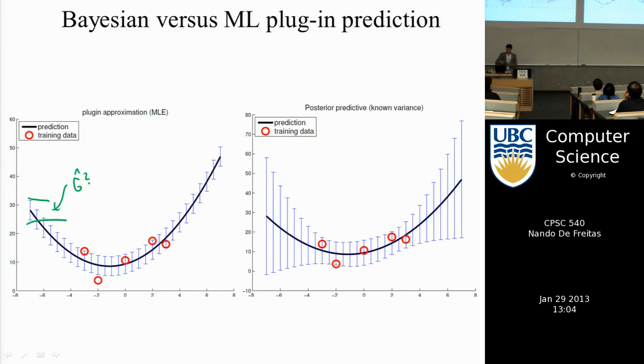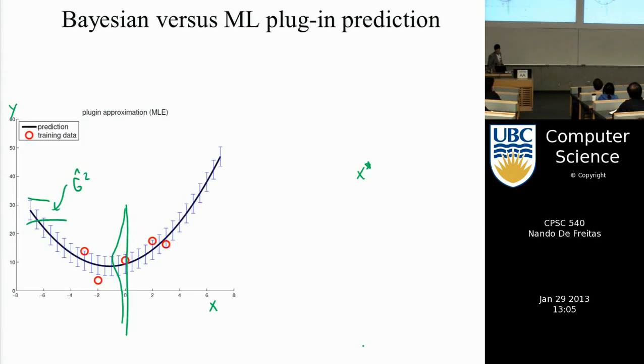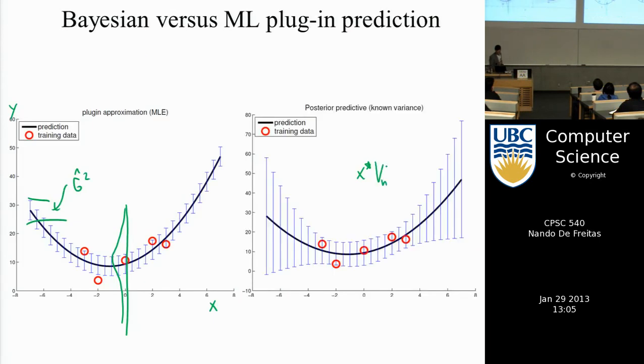And so each point, if we look at it marginally, if this is x and this is y, each point is distributed according to a Gaussian distribution, which is still the regression. However, that extra term that the Bayesians give us, that extra x, x star, V_n, x star term.